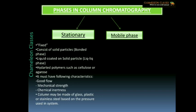The columns used are made of glass, plastic, or stainless steel, depending on the pressure used in the system. In high-pressure chromatography techniques such as HPLC and GLC, high pressure is used, so in those cases stainless steel columns are used.